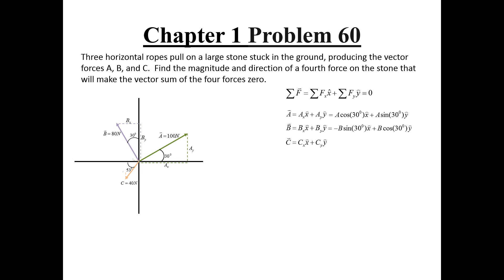The C vector is in the third quadrant making both of its components negative. Its x component is adjacent to the angle that was given, so it is equal to the magnitude of C times the cosine of 53 degrees, and the y component is then equal to the magnitude of C times the sine of 53 degrees.